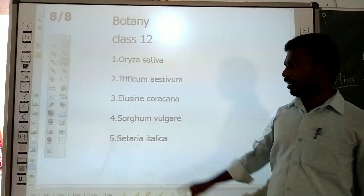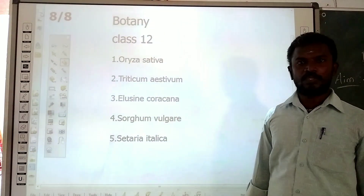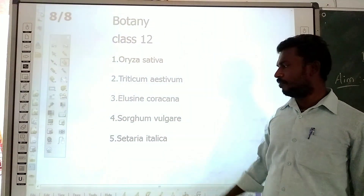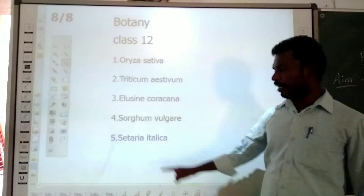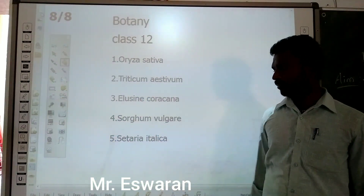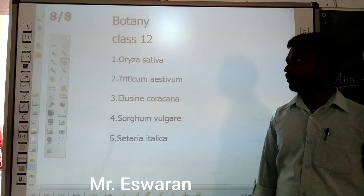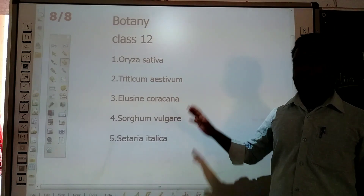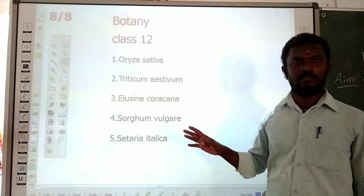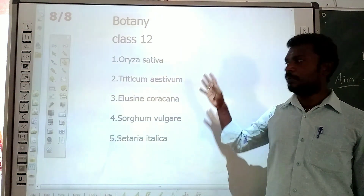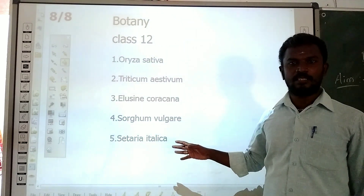What is the binomial name of Sorghum? Sorghum. What is the binomial name of Setaria? It is Setaria italica. These are the five objectives of the family Poaceae and the pulses. Thank you.